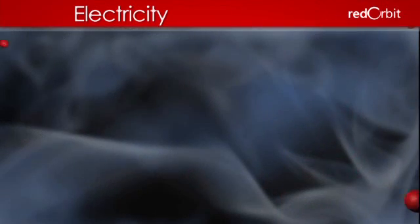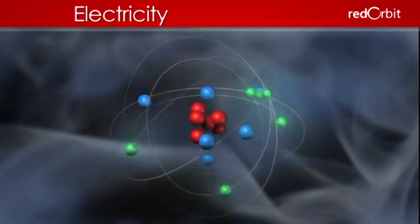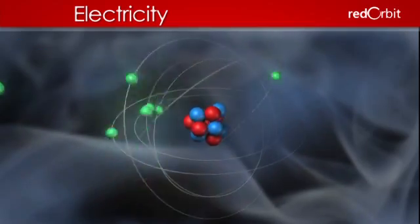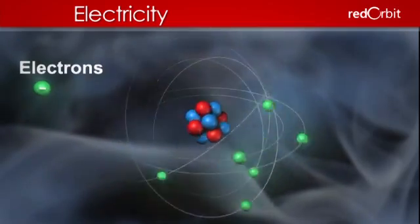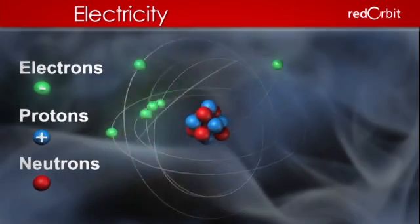Three smaller particles make up atoms: neutrons, electrons, and protons. Electrons have a negative charge, protons have a positive charge, and neutrons are neutral.